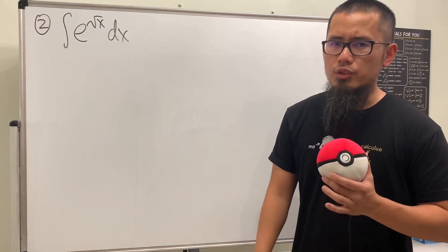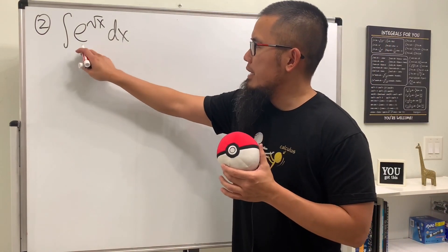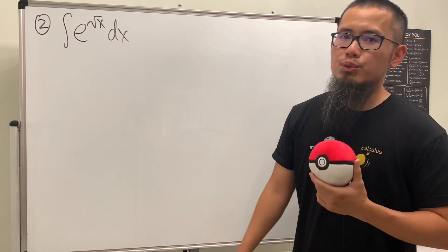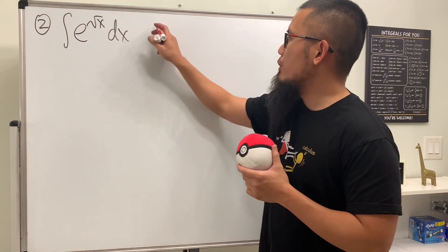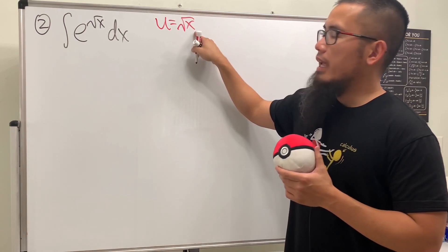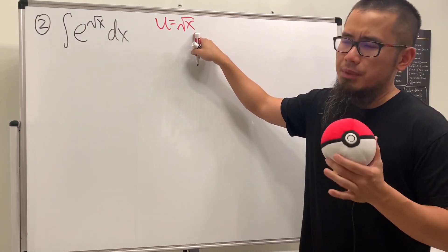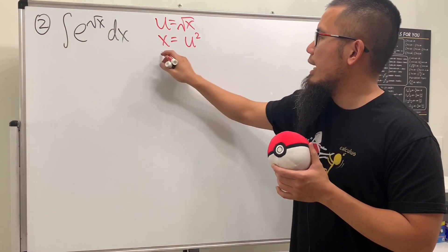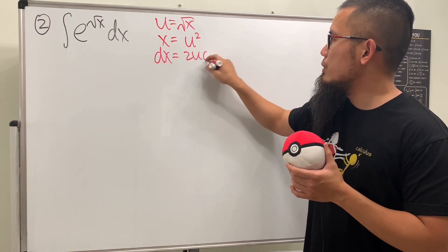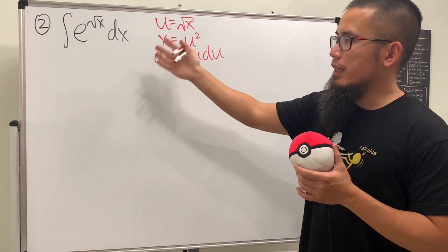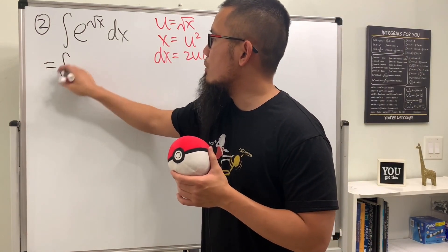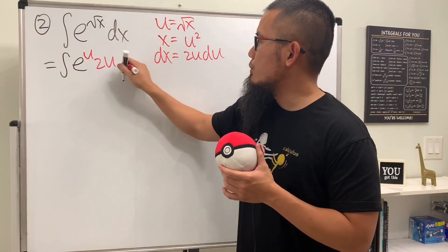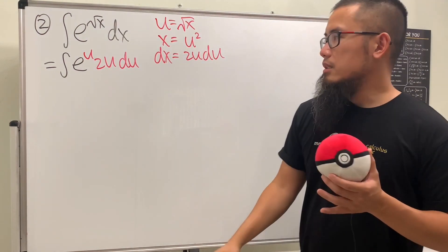Now for the second question — we have to integrate e to the square root of x. It looks really scary, but don't worry, this is doable. We just have to first do a u-sub. Let u equal square root of x. Let's isolate x first before we take the derivative: square both sides, so x is going to be u squared. Then differentiate, we get dx equal to 2u du. Now take this integral to the u world: we see this is the integral of e to the u, and dx is 2u du.